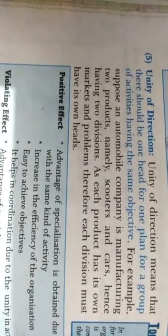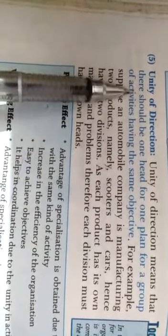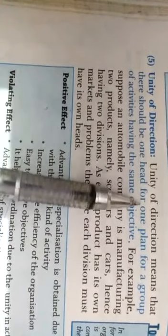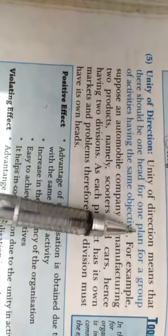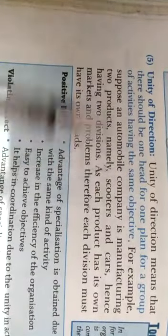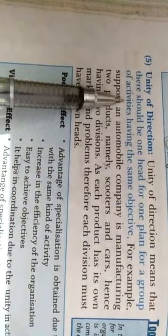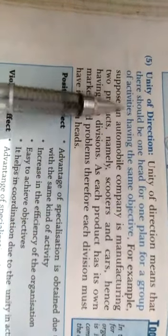What does unity of direction mean? Unity of direction means that there should be one head and one plan for a group of activities having the same objective. A group of activities means that you perform different activities, but with the same objective, there should be one head and one plan.